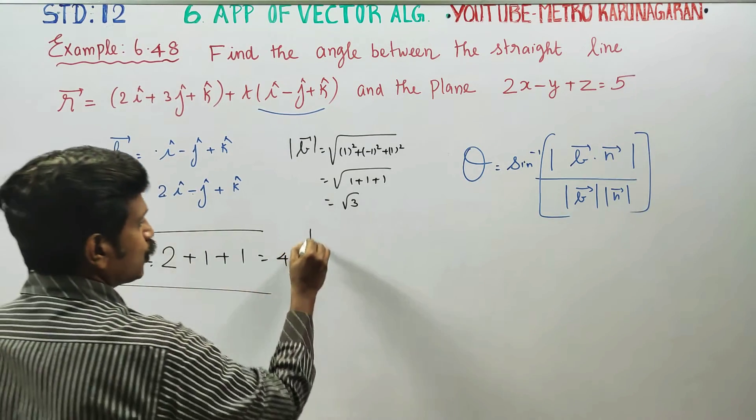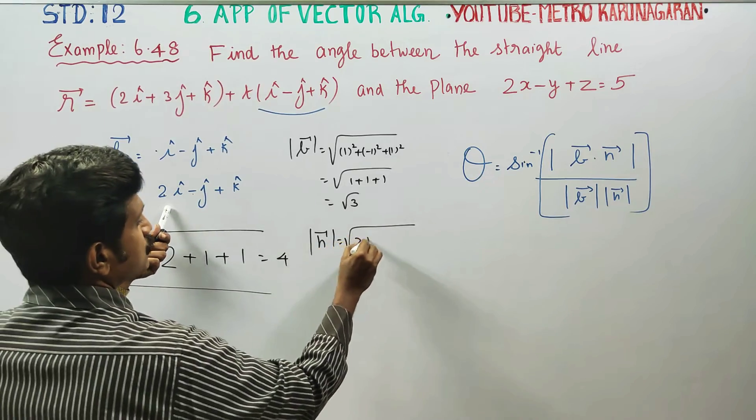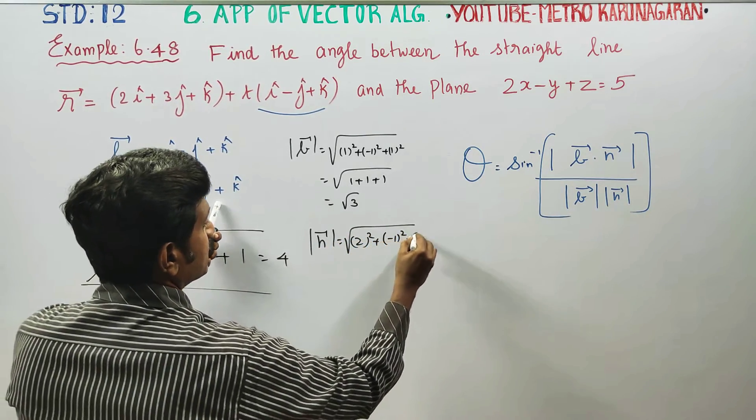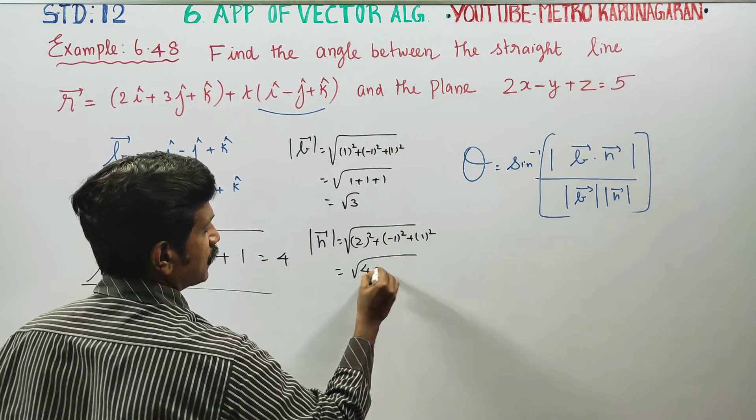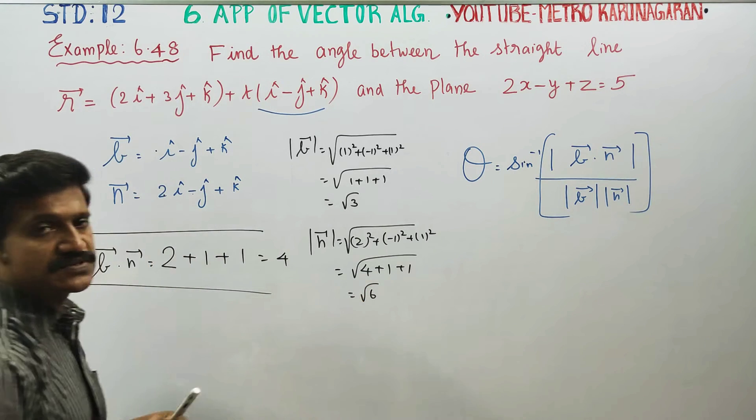Magnitude of n vector: square root of 2 square plus minus 1 square plus 1 square. 2 square is 4, minus 1 square is 1, plus 1 is root 6.